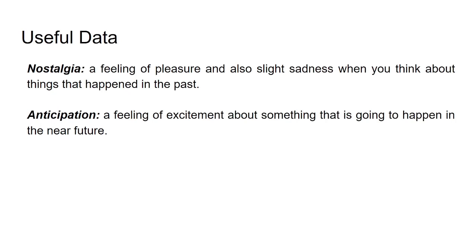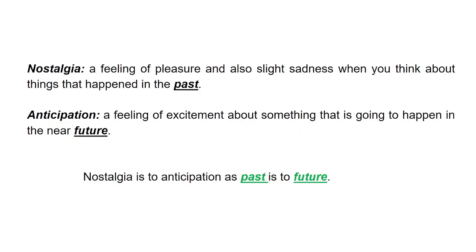I will explain the English dictionary meaning of nostalgia and anticipation. Nostalgia is a feeling of pleasure and also slight sadness when you think about things that happened in the past. Similarly, anticipation is a feeling of excitement about something that is going to happen in the near future.